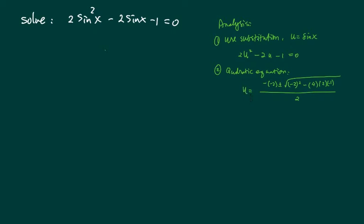Once we find u, we're going to substitute back in there to find out what x is. That would be arc sine. So let's proceed with solving this one.